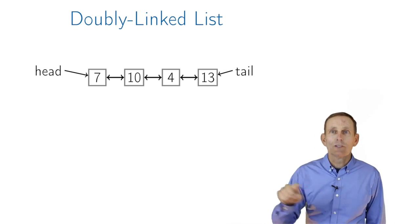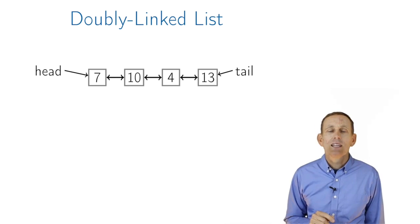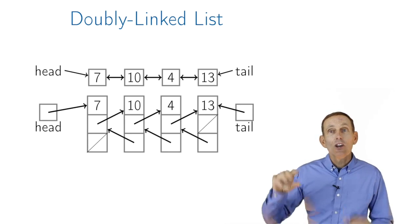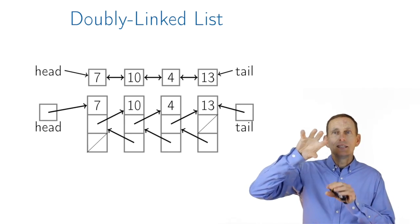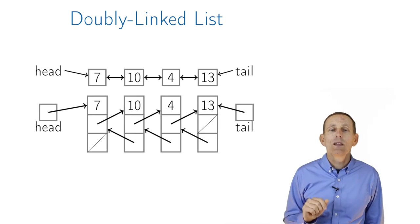So we'll have two pointers, forward and back pointers. That's the bidirectional arrow we're showing here conceptually. The way we would actually implement this is with a node that adds an extra pointer. So we'd have not only a next pointer, we'd have a previous pointer.